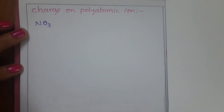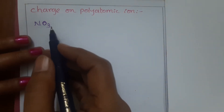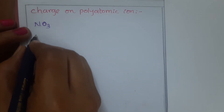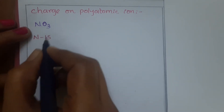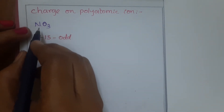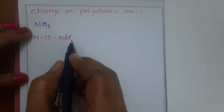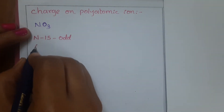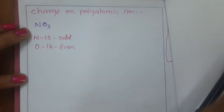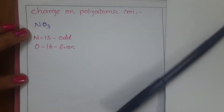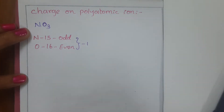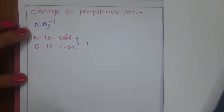To find the charge on a polyatomic ion, first you have to remember the group numbers of the atoms present. In NO3, the element present is nitrogen. Nitrogen belongs to the 15th group, so 15 is an odd number. First identify which group it belongs to and whether that number is odd or even. Next, oxygen belongs to the 16th group, so it is an even number.